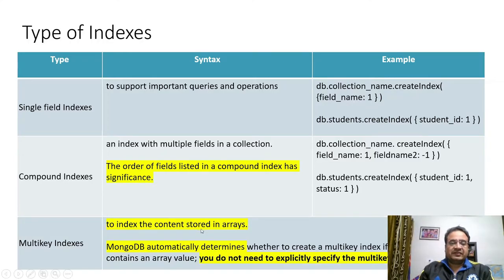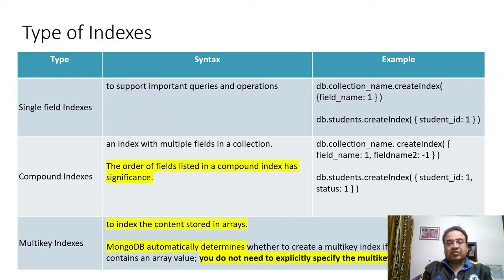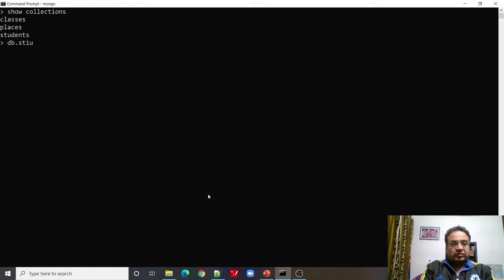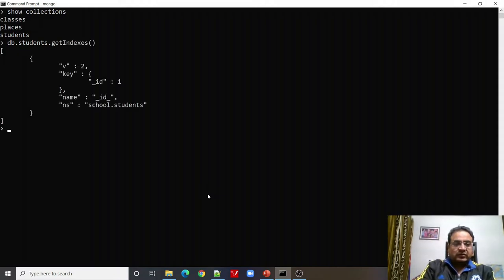Next is multi-key indexes. As we have seen, MongoDB has array fields or arrays of objects. So how can we create an index on those array fields? The good news is that we do not need to worry about that — if we are creating an index on an array field, MongoDB automatically takes care of that part. So we need not bother about how to create an index which has multiple values assigned to a field.